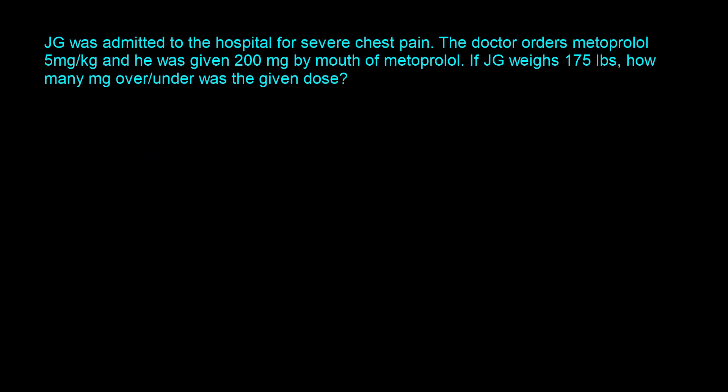Next example: JG was admitted to the hospital for severe chest pain. The doctor ordered metoprolol 5 mg/kg, and he was given 200 milligrams by mouth. JG weighs 175 pounds. How many milligrams over or under was the given dose? The normalized dose is 5 mg/kg. Convert 175 pounds to kilograms using 2.2 pounds per kilogram — pounds cancel — giving 79.55 kilograms.